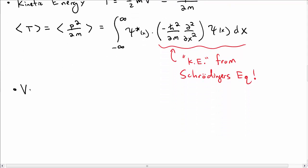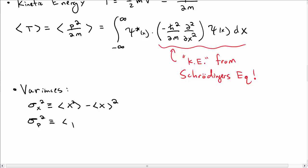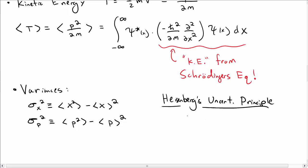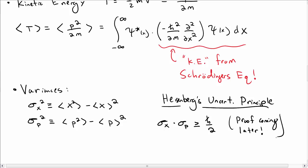It's traditional to talk about variances and standard deviations. The variance in x is the expectation value of x squared minus the square of the expectation value of x, and something similar for momentum. We can combine these in Heisenberg's uncertainty principle: the standard deviation in x times the standard deviation in momentum is greater than h-bar over 2. A proof will come later in the course. Okay, so those are some of the main postulates of quantum mechanics, and now we'll start getting into the details.